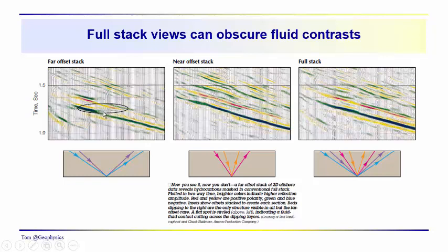Notice that the far offset stack shows a flat spot, which is indicative of a fluid contact cutting across the reservoir. This could be a gas-water interface. We don't see it in the near offset stack. There's much less evidence for it in the full stack. It's become largely obscured. You can see how amplitude variations with offset and the full range of stack can obscure features that you might be interested in.